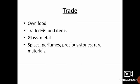Next, trade. The Egyptians grew some of their own food and traded for food items and goods that they could not produce. They also traded for glass, metal and other products. In addition, they brought in spices, perfumes, precious stones and rare metals from other countries.